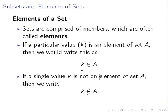Now, if a single value k is not an element of A, then we would write k is not an element of A. That element symbol just gets a line through it. So that's how we would write an element. I have a little example to discuss later on.